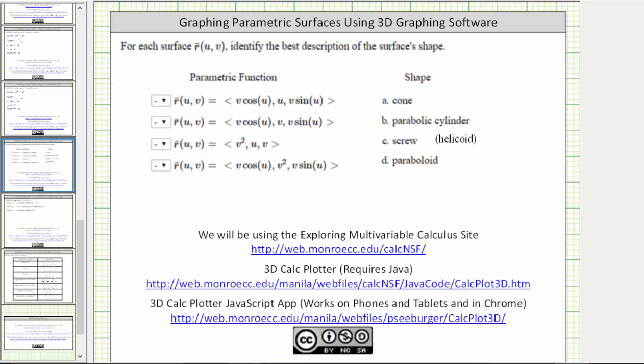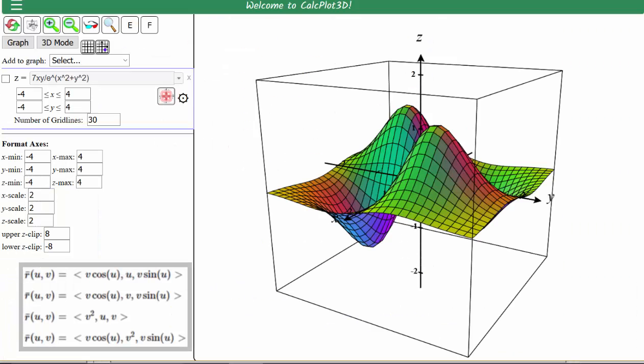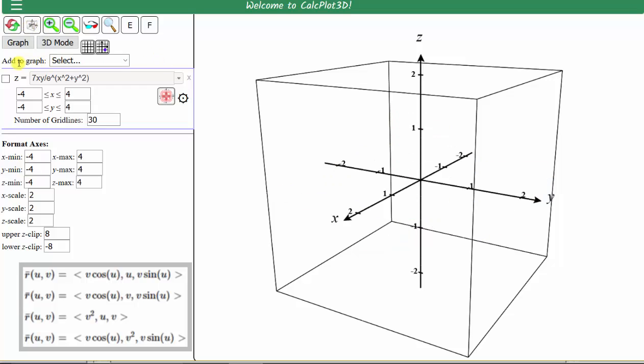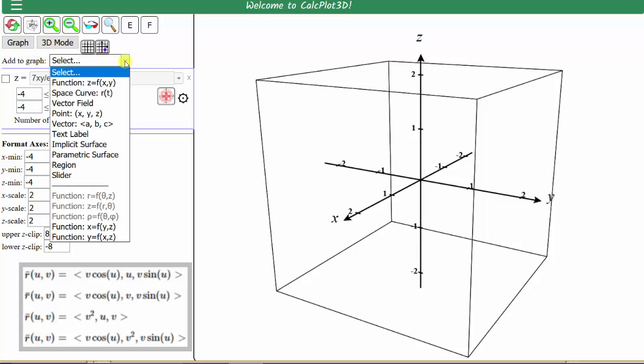Let's graph our first surface. When the app is opened, this is always the default surface that is graphed. First let's clear this surface by clicking this button here for clear the plot. Next to the right of add to graph, we click on this arrow, which brings up this drop-down menu. We select parametric surface.